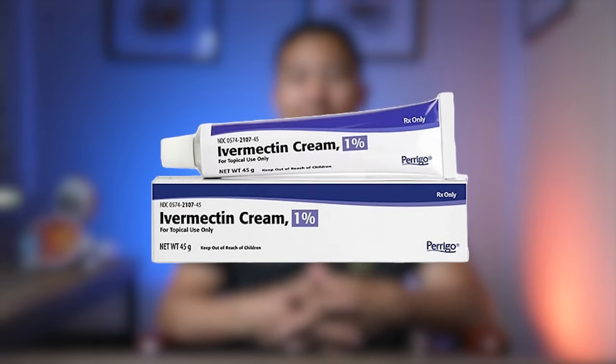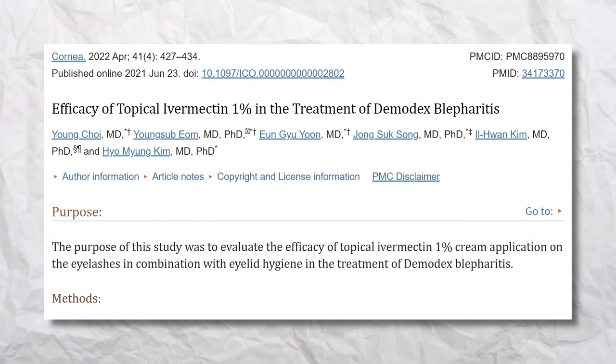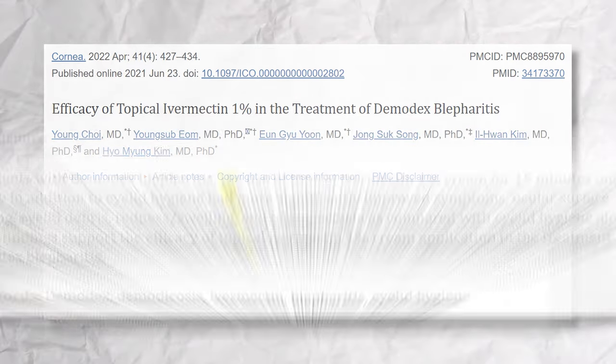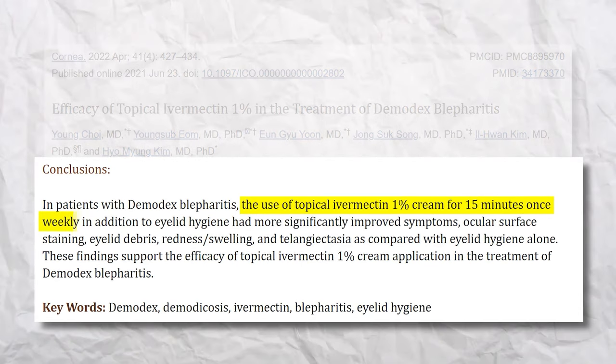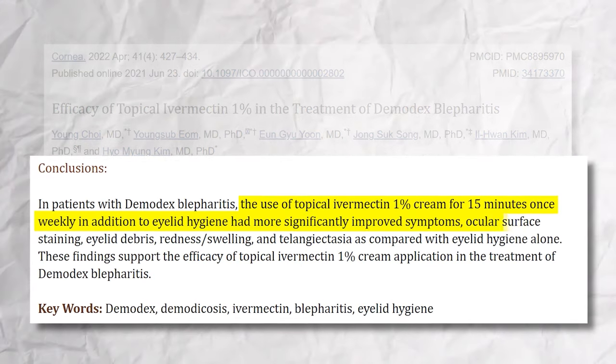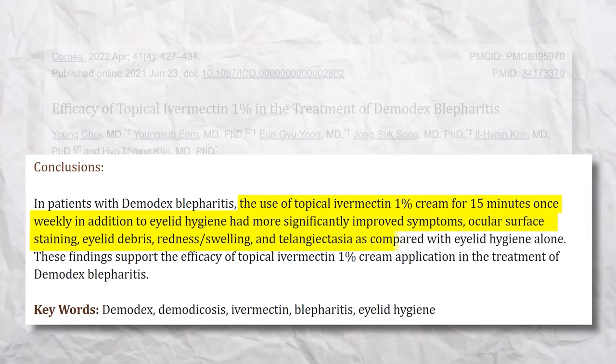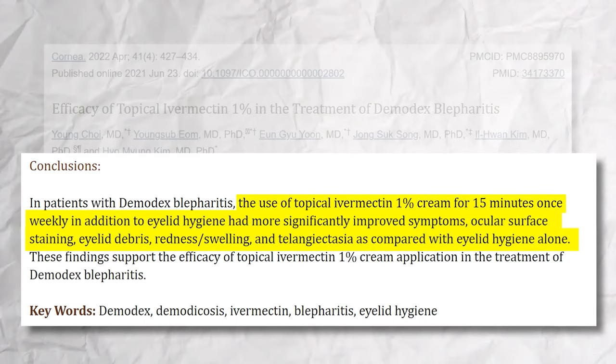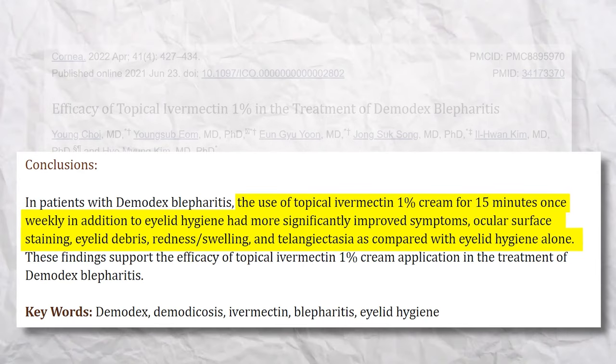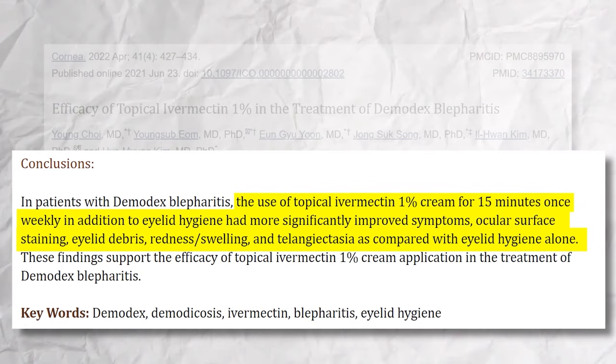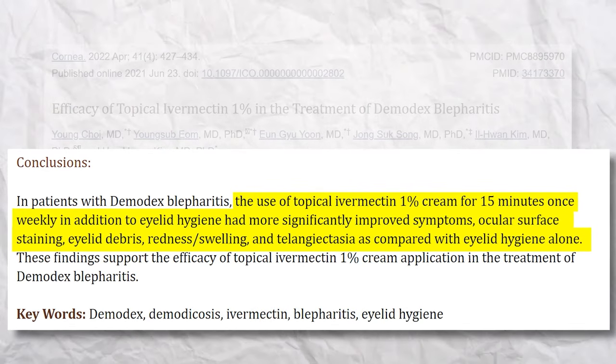Historically, ivermectin is a medication used to treat parasitic infections such as worm infections or scabies. A 2022 study from the journal Cornea showed that using topical 1% ivermectin cream applied to the eyelids for 15 minutes once a week, in addition to typical eyelid hygiene with eyelid wipes, significantly improved symptoms, eyelid debris, redness, and swelling compared to eyelid hygiene alone. The only reported side effect was mild eyelid irritation, so I think ivermectin is a really good option for demodex blepharitis.